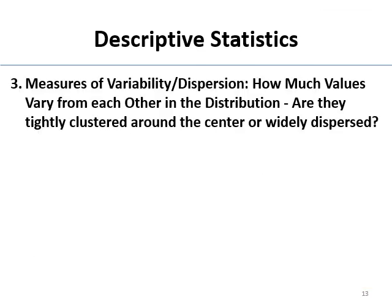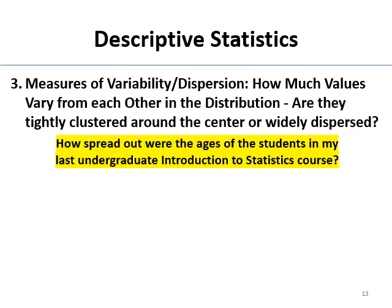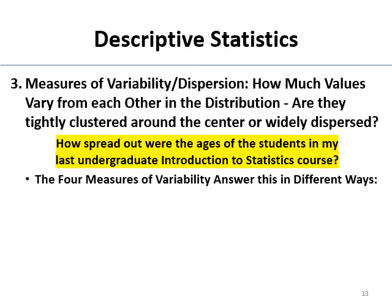So that is central tendency. Let's talk about variability. Students sometimes wonder why they should care, but variability is important. Variability or dispersion tells you how much the values varied from each other in a distribution — how spread out they were. Were they really clustered in the middle or were they widely dispersed? So how spread out were the ages of the students in my last intro stats course?